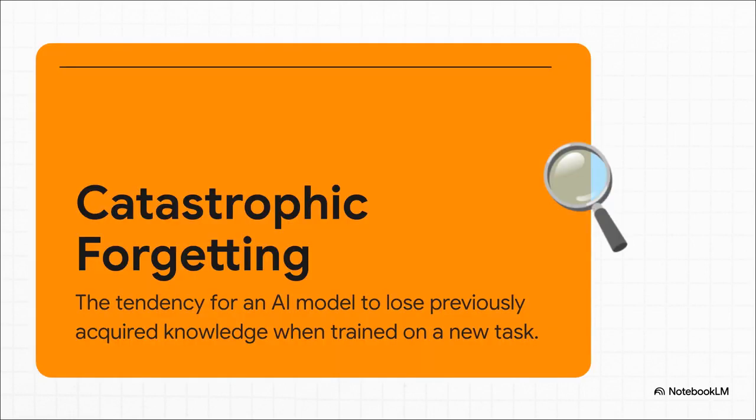And this challenge has a pretty dramatic name, catastrophic forgetting. It's exactly what it sounds like. The model just loses what it knew before when you show it something new. And this isn't some minor bug, it's a fundamental roadblock that's kept us from building AI that can truly learn and grow over time, like a person does.